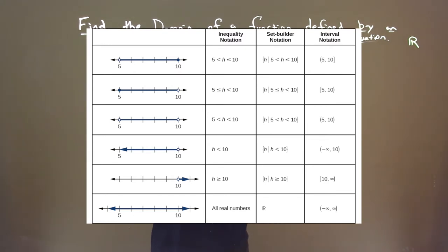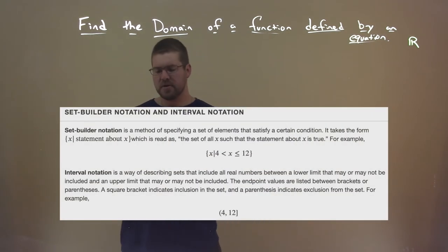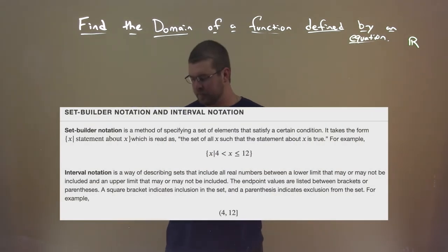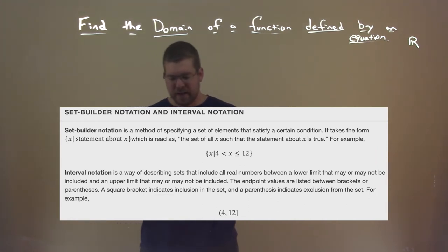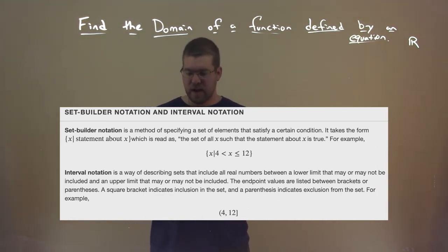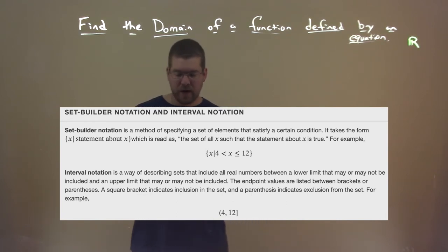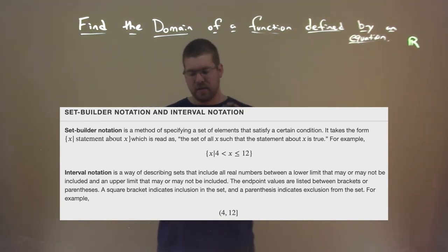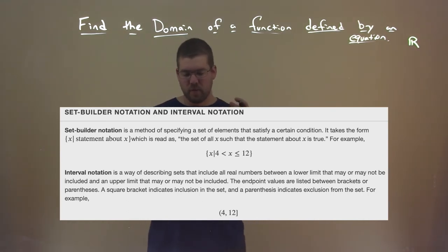Set builder notation is a method of specifying a set of elements that satisfy a certain condition. It takes the form x-bar, statement about x — read as 'the set of all x such that the statement about x is true.' For example: x such that 4 is less than x, which is less than or equal to 12.